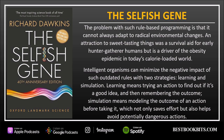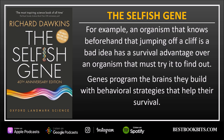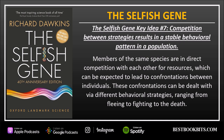The problem with such rule-based programming is that it cannot always adapt to radical environmental changes. An attraction to sweet-tasting things was a survival aid for early hunter-gatherer humans, but is a driver of the obesity epidemic in today's calorie-loaded world. Intelligent organisms can minimize the negative impact of such outdated rules with two strategies: learning and simulation. Learning means trying an action to find out if it's a good idea and then remembering the outcome. Simulation means modeling the outcome of an action before taking it, which not only saves effort but also helps avoid potentially dangerous actions. For example, an organism that knows beforehand that jumping off a cliff is a bad idea has a survival advantage over one that must try to find out. Genes program the brains they build with behavioral strategies that help their survival.